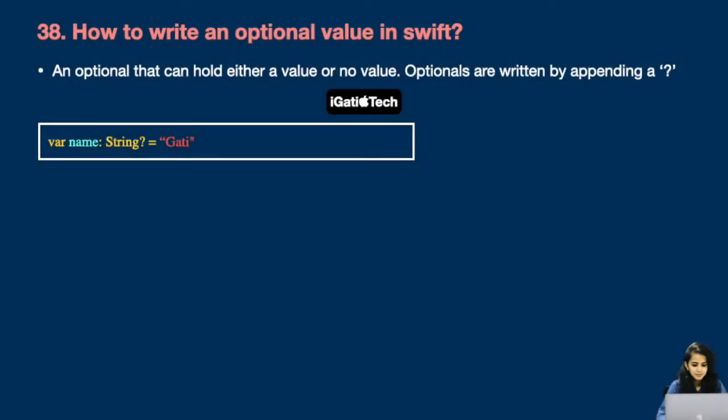Next: how to write an optional value in Swift. An optional can hold either a value or no value. Optionals are written by appending a question mark. In the example, I have declared 'name' with an optional String type — that is, String followed by a question mark at the end. This is how we define an optional in Swift.